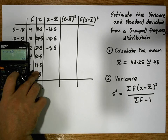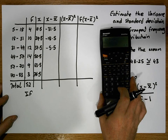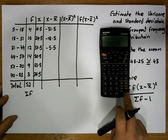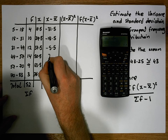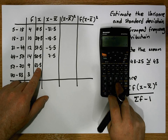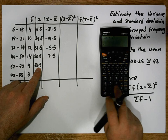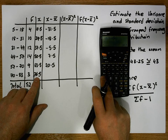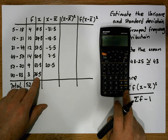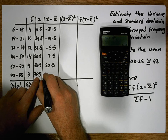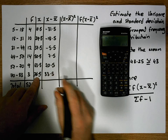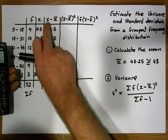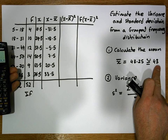The next x value is 50.5 minus 43, which gives us 7.5. The next gives us 20.5, and then 33.5. So now we've calculated the distance that each observation is away from the mean value.